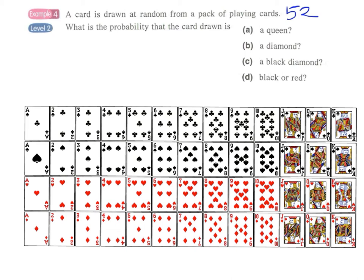And in each suit we have 13 cards. We have ace, 2, 3, 4, 5, 6, 7, 8, 9, 10, jack, queen and king. Therefore, we have a total of 4 times 13 cards which is 52 playing cards.